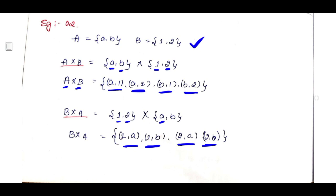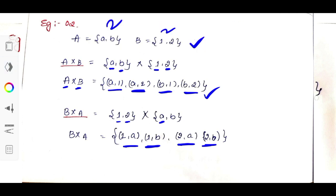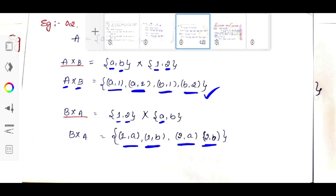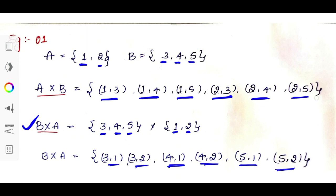In this example, set A contains 2 elements and set B contains 2 elements, so A cross B contains 2 × 2 = 4 elements. In the first example, set A contains 2 elements and set B contains 3 elements, so A cross B contains 6 elements. Now let's go through the five important points.